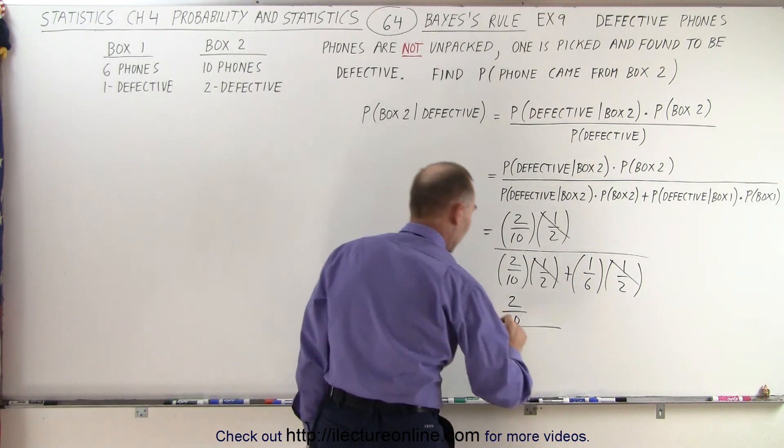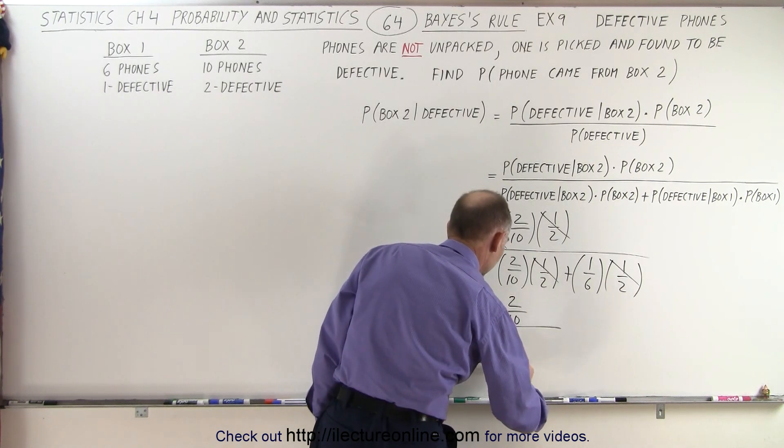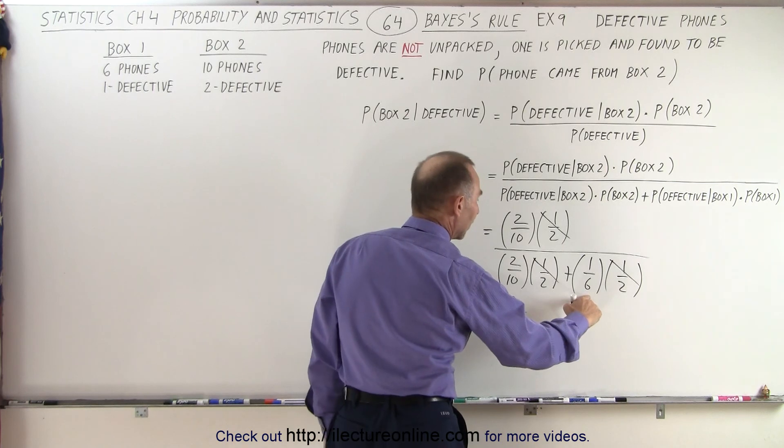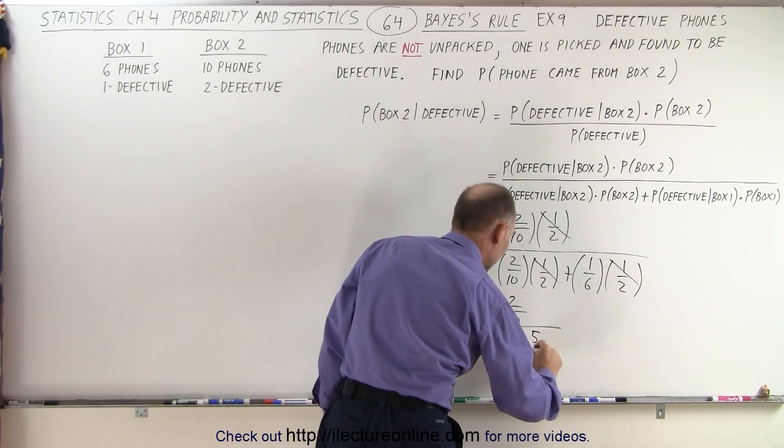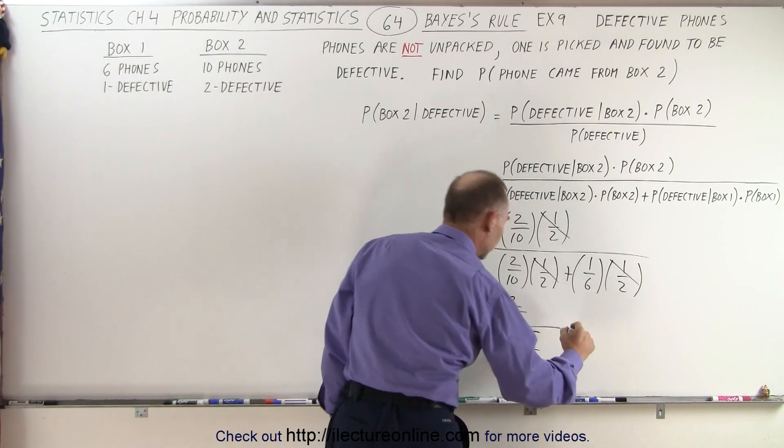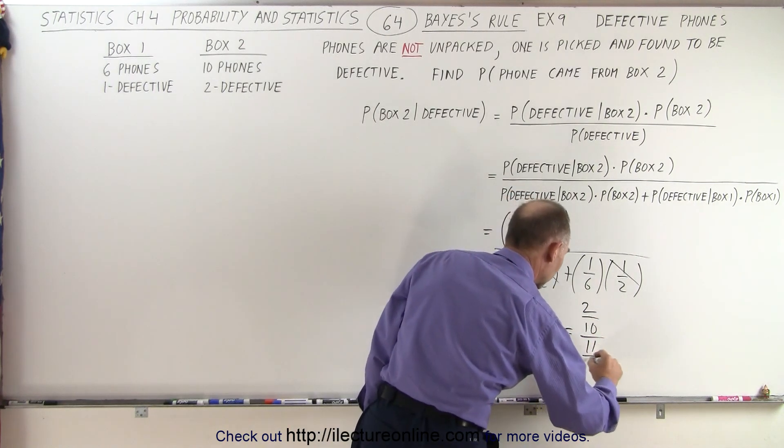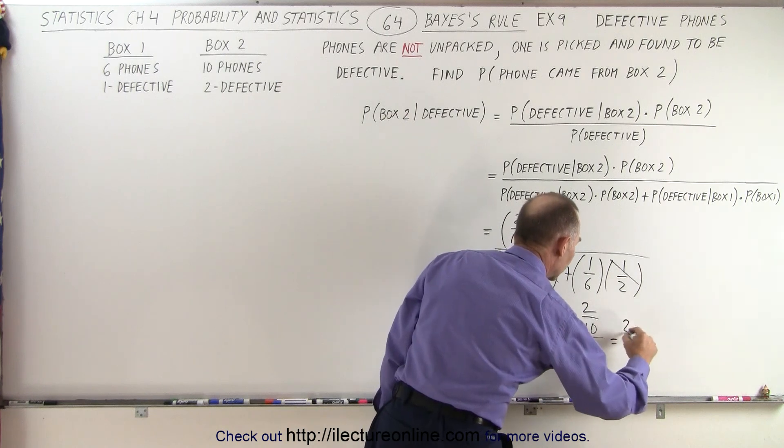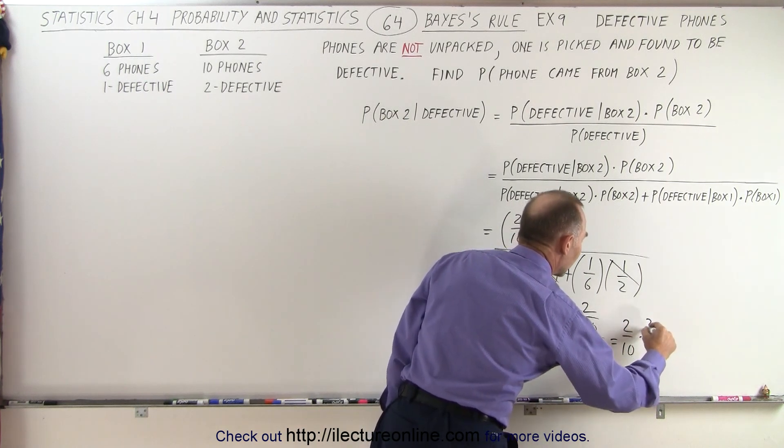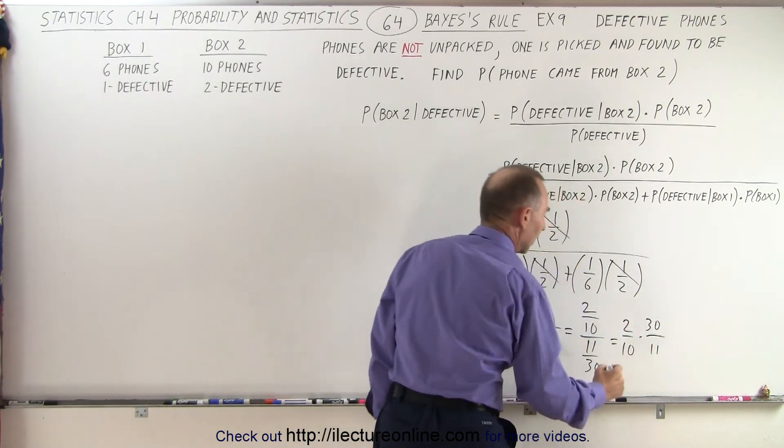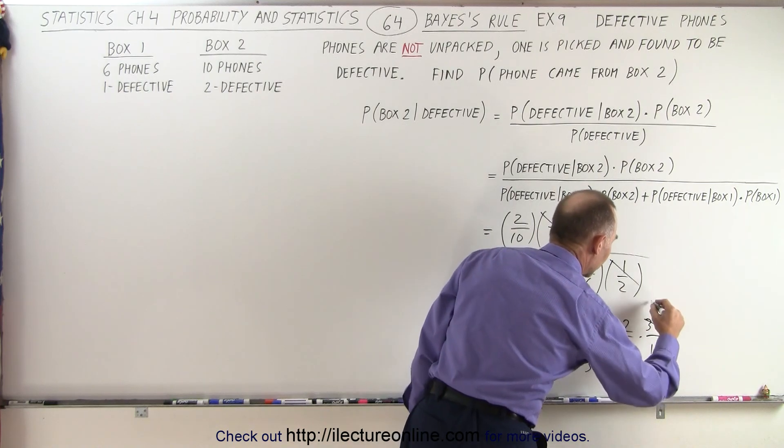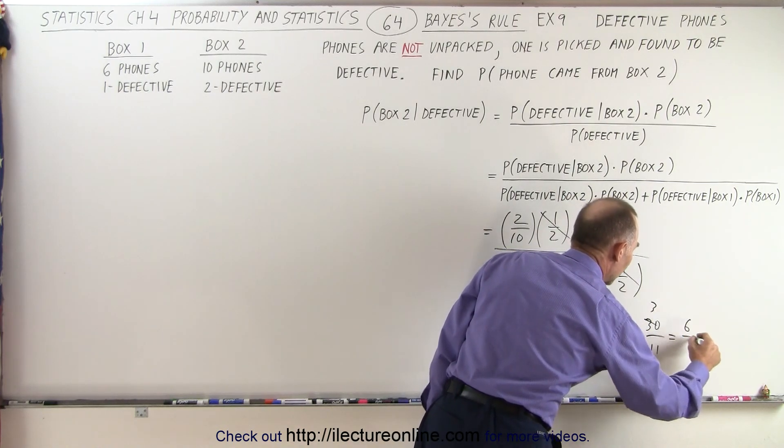So this is equal to two tenths divided by, the common denominator here would be thirty, so it would be six out of thirty plus five out of thirty, which is equal to two tenths divided by eleven thirtieths, which is two tenths times thirty over eleven. The ten and the thirty cancel, that gives us six over eleven.